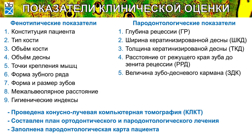Какие показатели клинической оценки мы учитываем при планировании хирургического лечения рецессии десны? Это фенотипические показатели: конституция, тип кости, объем кости, объем десны, точки крепления мышц, форма зубного ряда, форма и размер зубов, межальвеолярные расстояния, гигиенические индексы. Всем проводится конусно-лучевая компьютерная томография до и после. Составляется план ортодонтического и пародонтологического лечения, и заполняется пародонтологическая карта пациента.